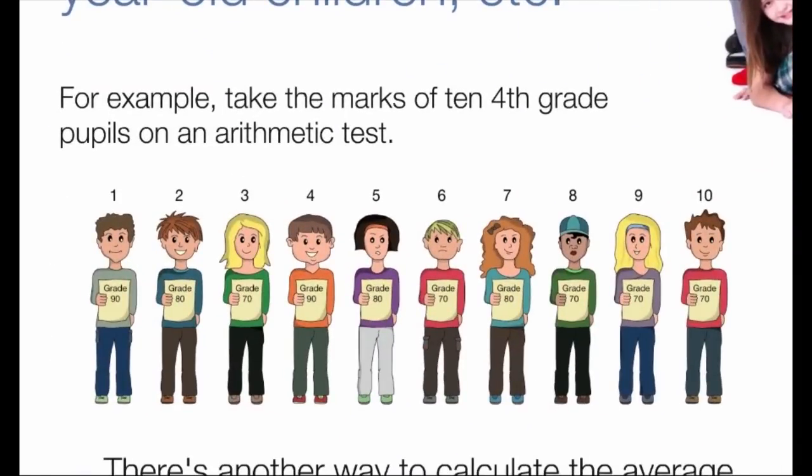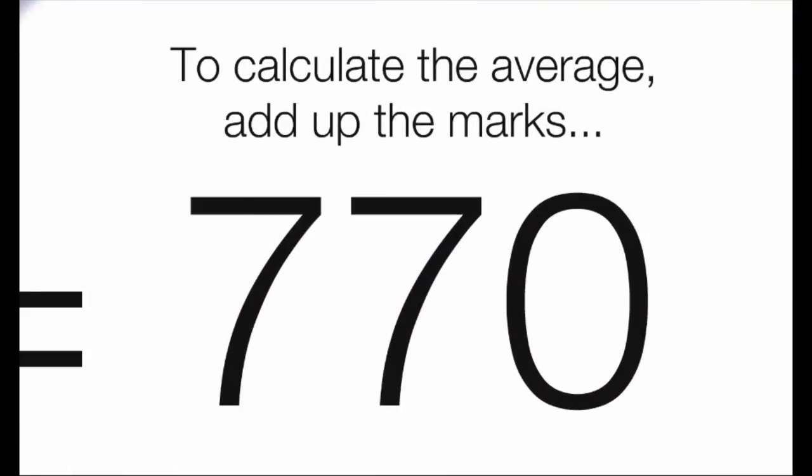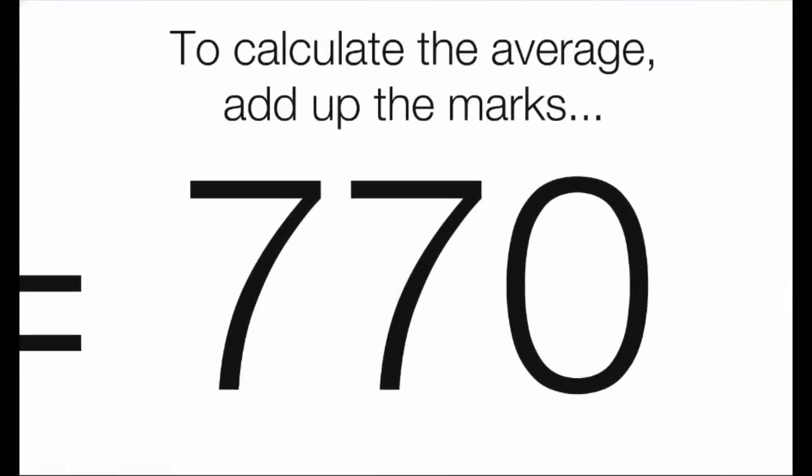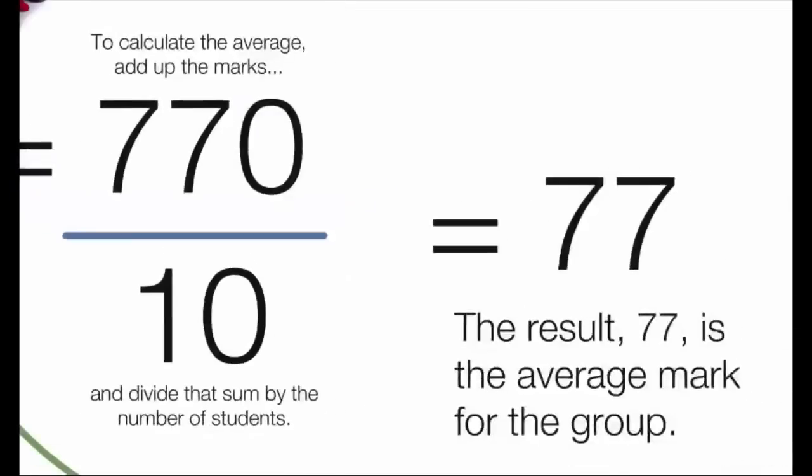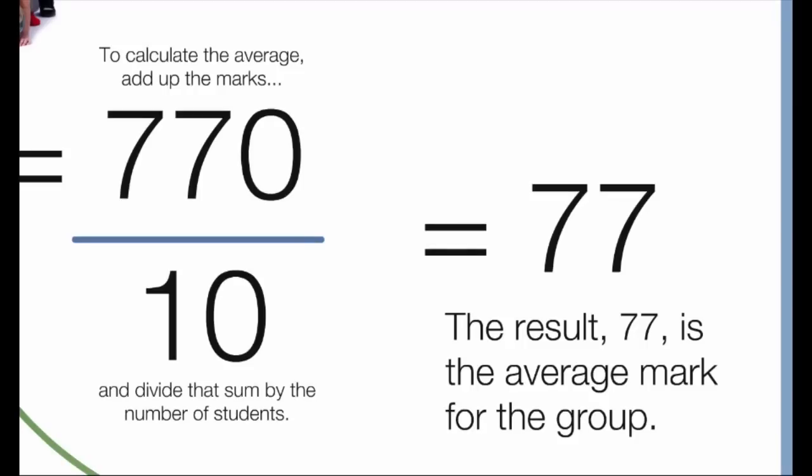For example, take the marks of 10 fourth-grade pupils on an arithmetic test. To calculate the average, add up the marks and divide that sum by the number of students. The result, 77, is the average mark for the group.